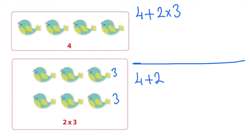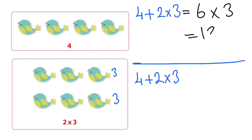If we do four plus two equals six, and then six times three equals 18 — but when I look at the boxes, there are 10 birds, not 18. That means this operation is wrong.